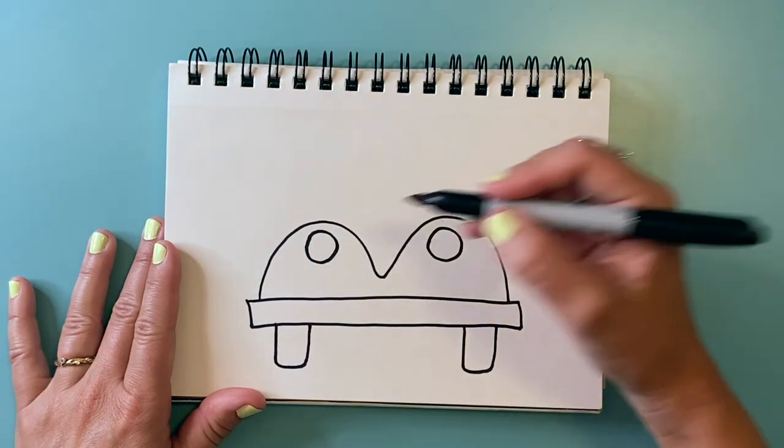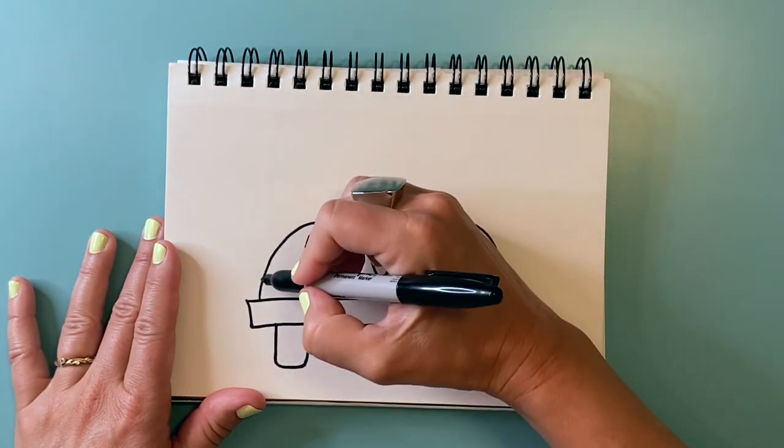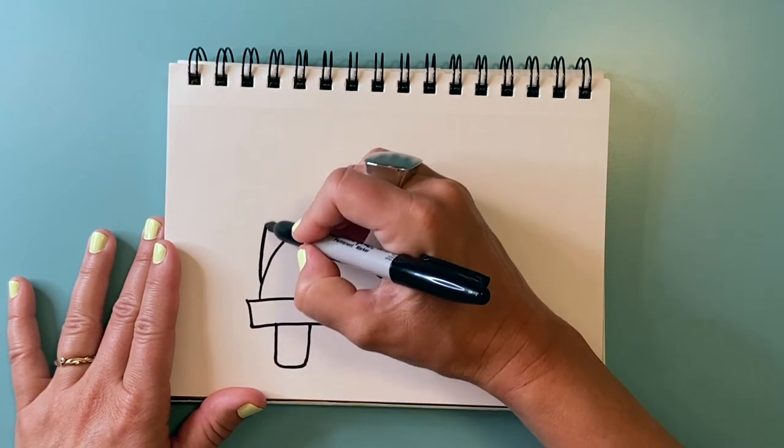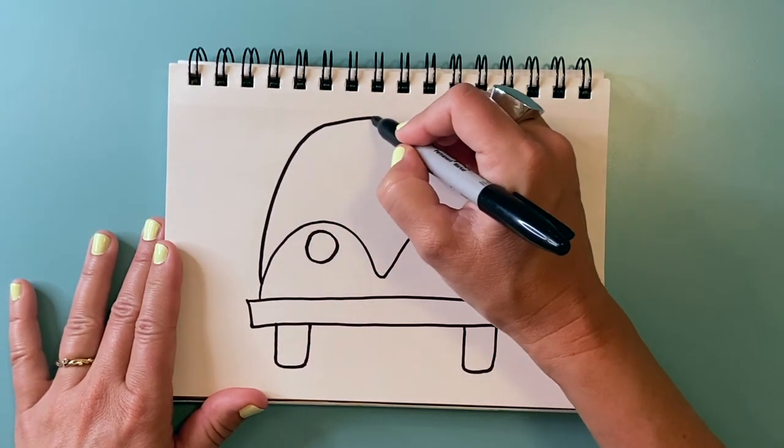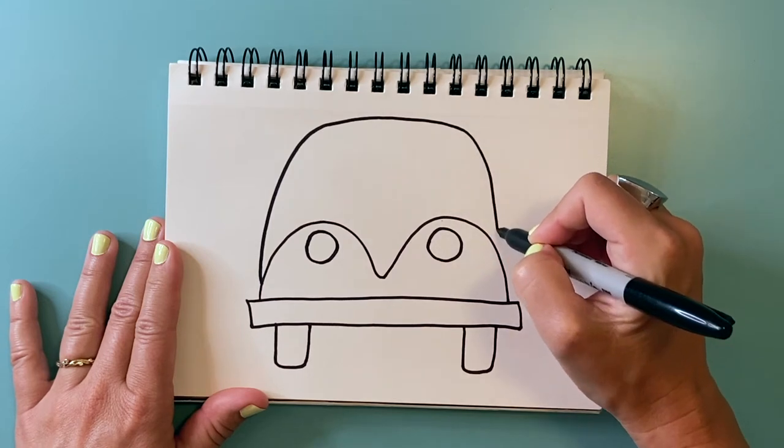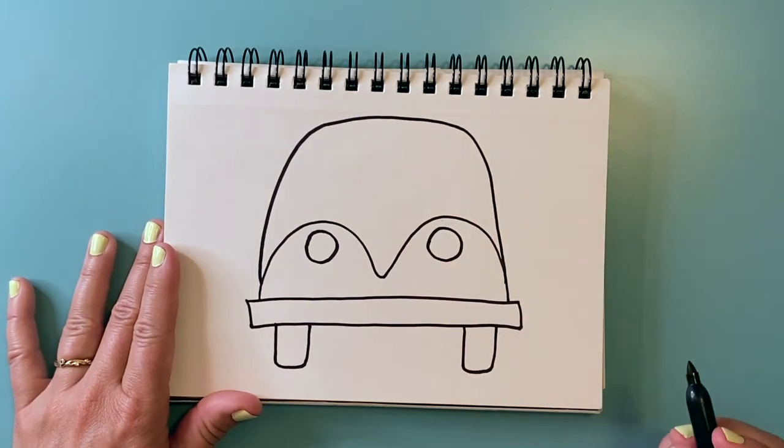And then we're gonna make the top of our VW bug. So it's gonna make a big mountain shape that's a little bit flat on the top and comes down on the side.